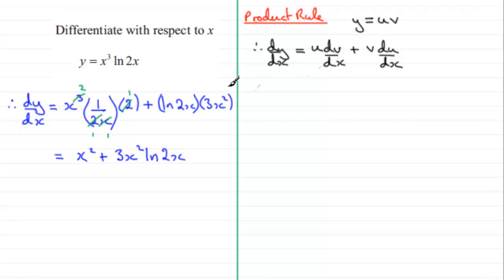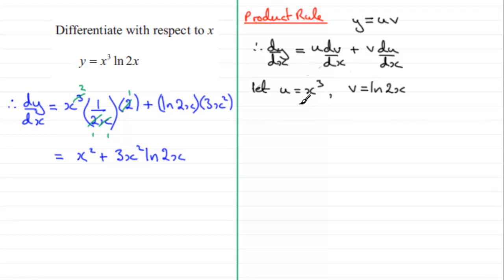In this example I let u equal x cubed and v equal the natural log of 2x. I needed to differentiate each of these. When it came to differentiating x cubed, du/dx is simply 3x squared.